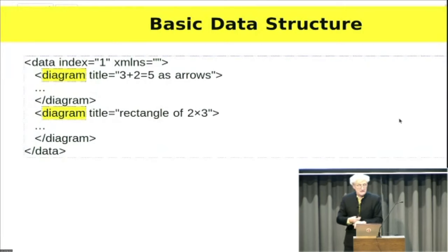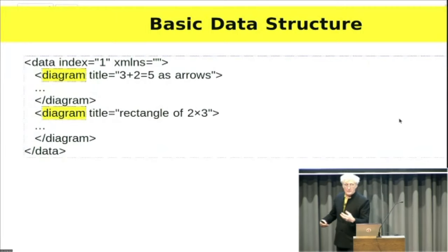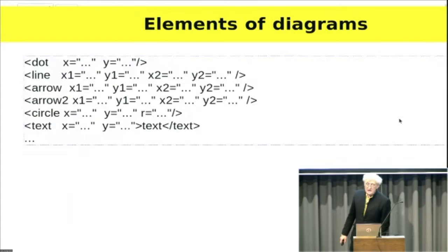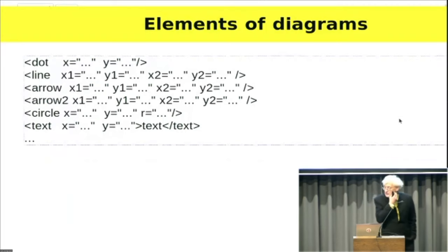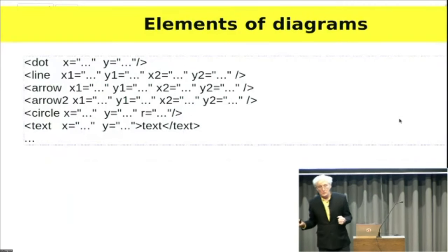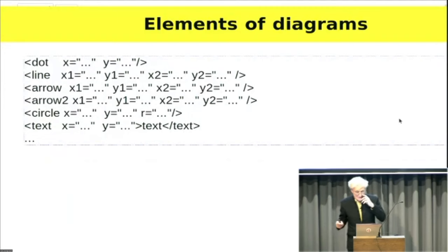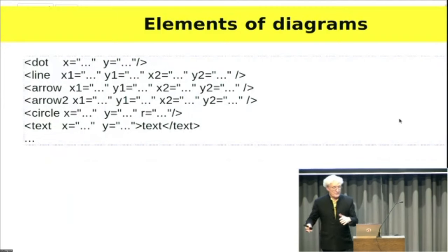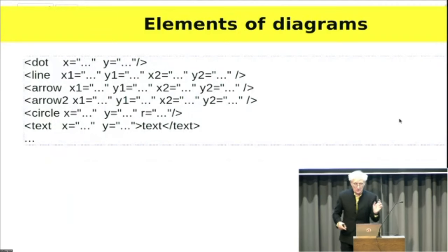My basic data structure is just a string of diagrams. Each diagram has a title, and there's an index at the top indicating which one it opens up at, so when I start the app it starts with the one I'm working on. Each diagram contains a number of primitives — dot, line, arrow (with an arrowhead at one end), arrow-two (arrowhead at both ends), circles, and text. In the next version it's much easier because I just have a position of XY with commas, so I don't have to separately specify X and Y — I can put it all in one attribute.